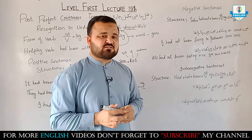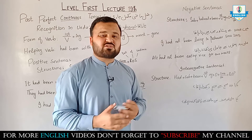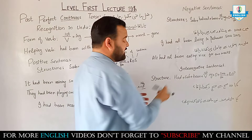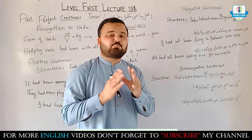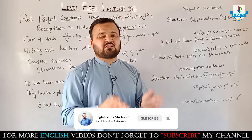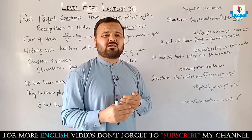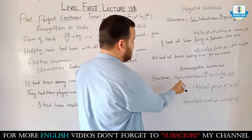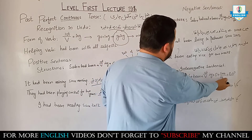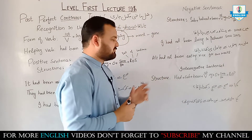Now coming to interrogative sentences — those sentences in which there is a question. The structure is: we put the helping word at the start of the sentence. When the helping word comes with 'not', it becomes negative. The structure is: Had + subject + been + first form + ing + object + since/for + rest of sentence + question mark.